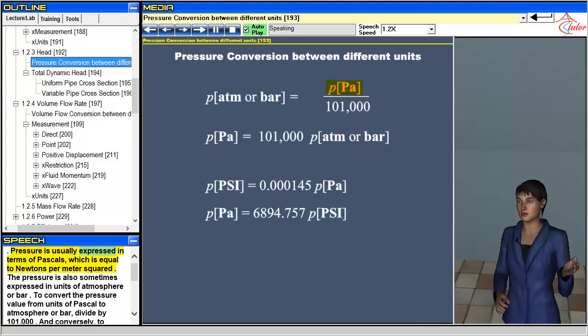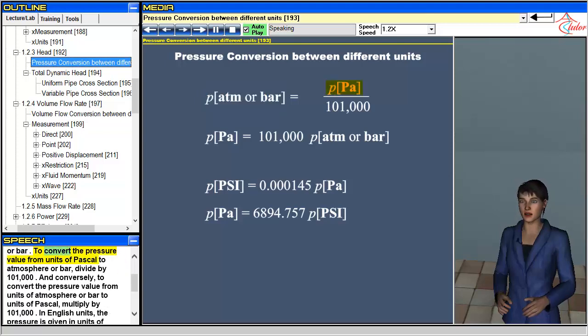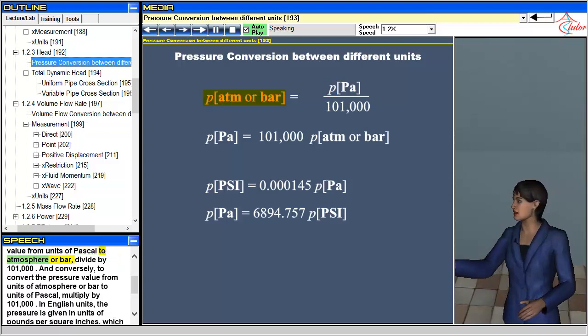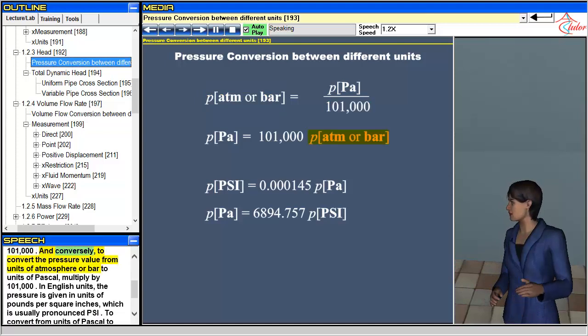Pressure is usually expressed in terms of pascals, which is equal to newtons per meter squared. The pressure is also sometimes expressed in units of atmosphere or bar. To convert the pressure value from units of pascal to atmosphere or bar, divide by 101,000.